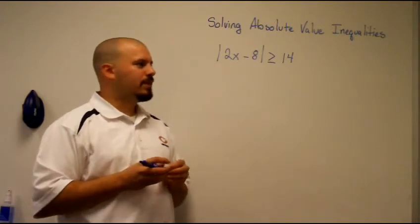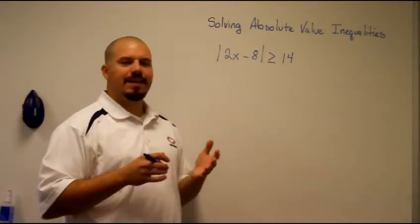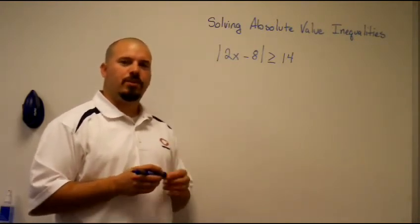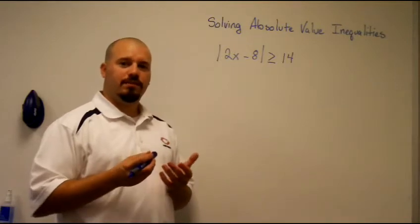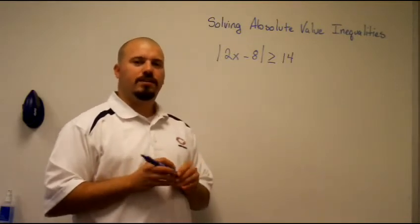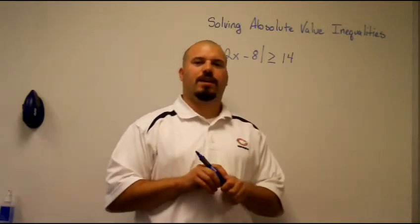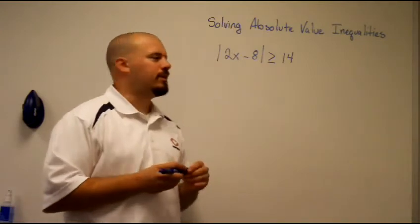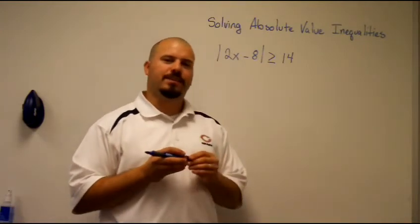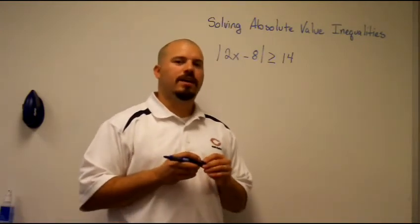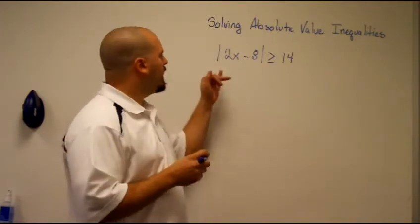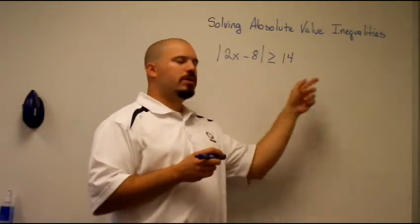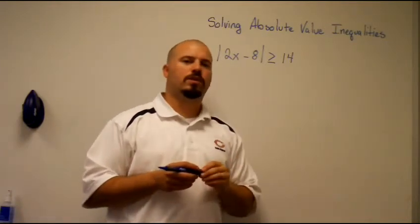For example, if you take the numbers 10 and negative 10, the distance that 10 is from zero on a number line is 10, and the distance that negative 10 is from zero is also 10. So we're going to focus on that distance idea and look at solving the absolute value of 2x minus 8 is greater than or equal to 14.